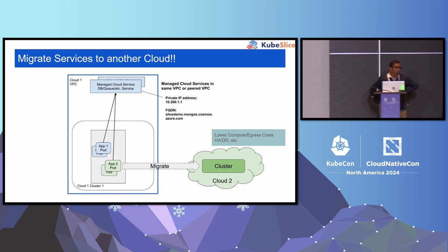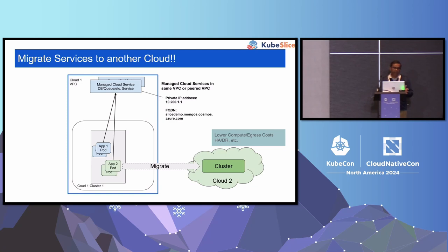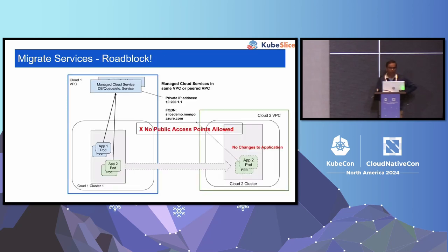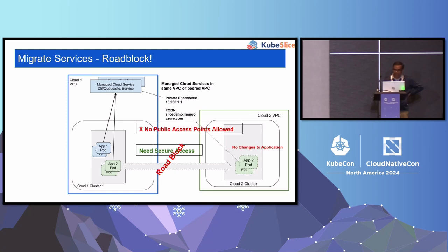The tricky part is most clusters in one cloud will have some tethering to managed services in the cloud — like a database, or queues, a lot of different services. Most of the time these services will be accessed with private endpoints, and you want to keep that aspect of it, not exposing the private FQDN anywhere else. So we want to migrate, but we are going to hit a roadblock: no public access points allowed, no changes to application, and I want secure access.